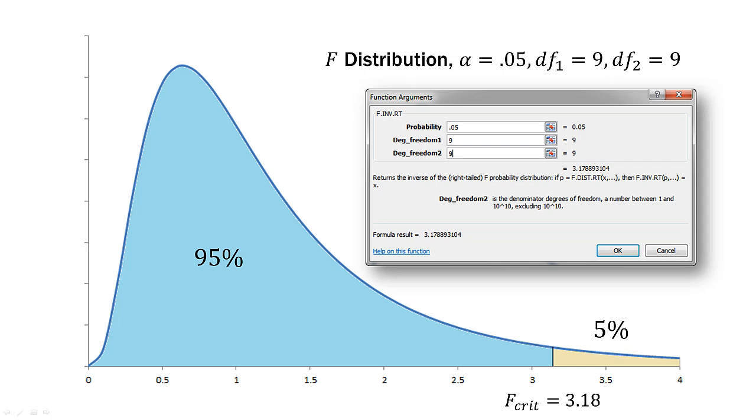We'll round up to 3.18. So that will be the threshold as to whether or not we put the F statistic in the rejection region or non-rejection region.